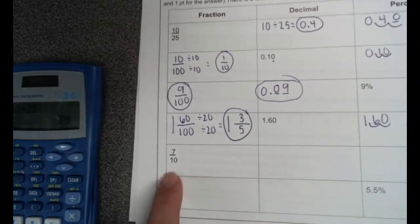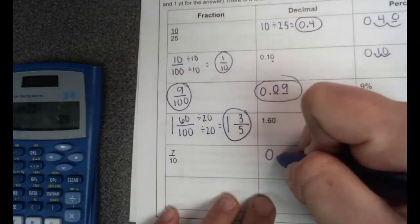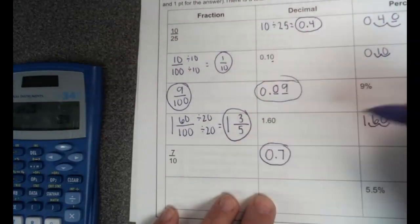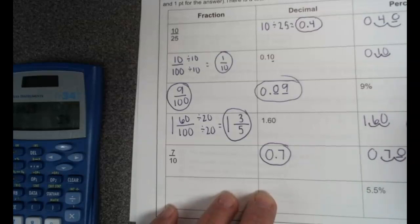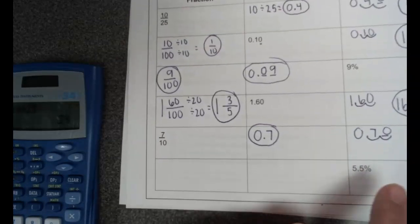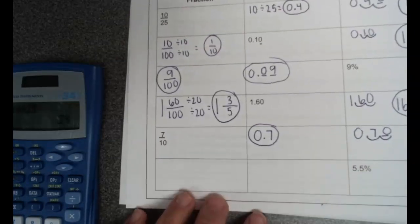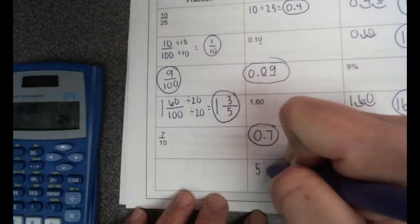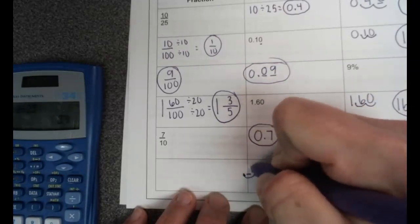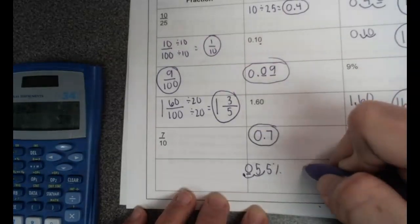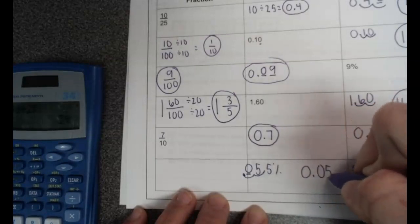Our next one we're going to write as a decimal. Seven tenths, so we're going to put seven in the tenth spot. We're then going to take our decimal, we're going to move it two times to the right, and we get 70 percent. And our last one on the side, 5.5 percent. I'm going to put it to a decimal first. So to do that, I go one, two, and in that blank spot I'm putting a zero, so 0.055.